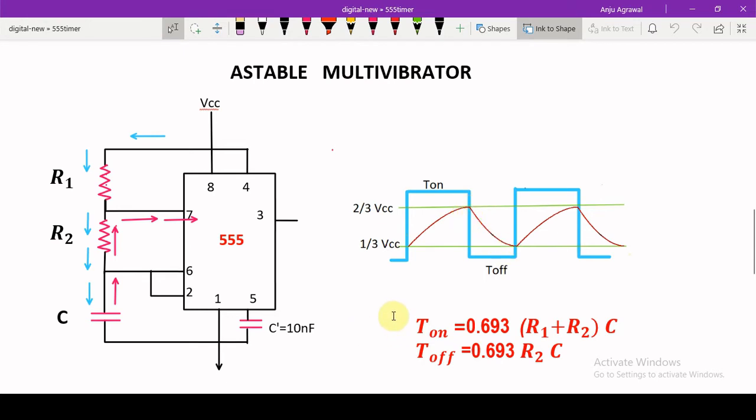For this particular circuit, the on time will always be greater than the off time. That is why such circuit will always give us a duty cycle which will be greater than 50%.